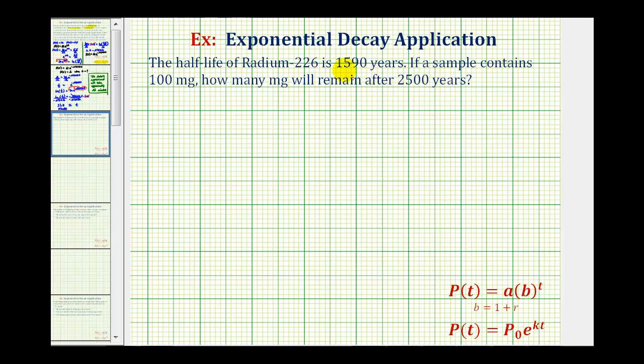To model this exponential decay, we have the option of using this exponential function here, or this exponential function here. So let's talk about the differences. In this function, p of t is the amount after time t, a is the initial amount, b is the base equal to one plus r, where r is the decay rate per unit of time, and t is time.